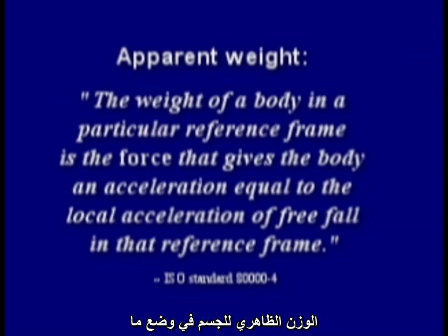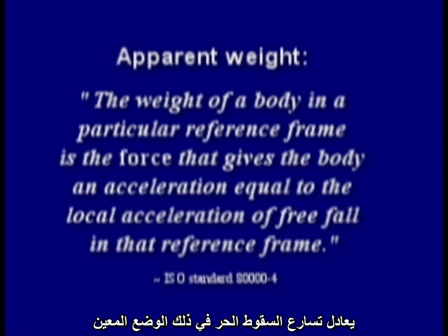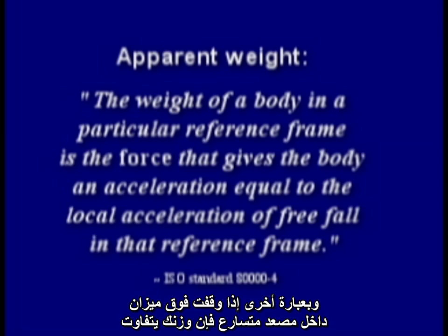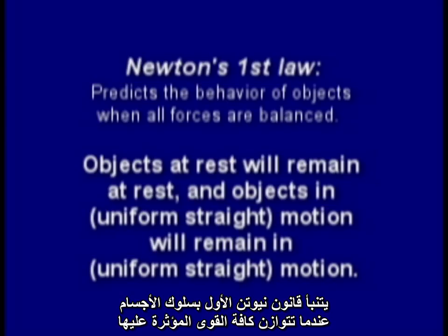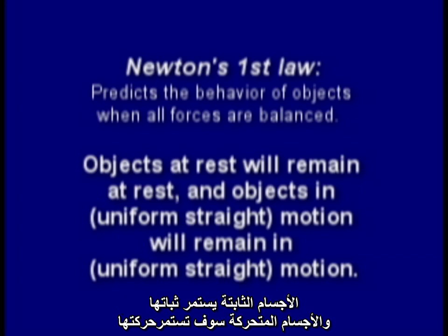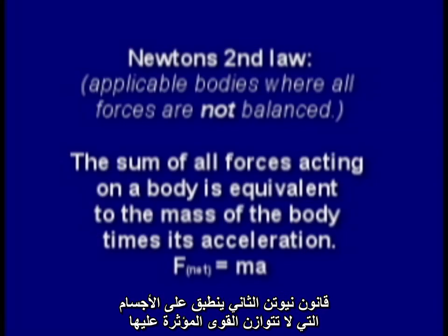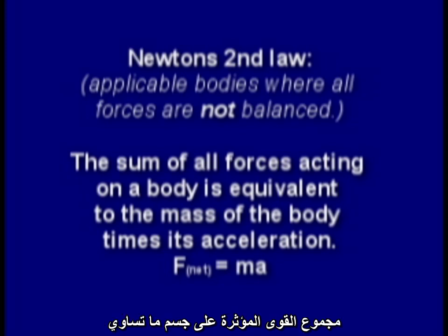The weight of a body is the product of its mass and the acceleration due to gravity: W equals mg. The apparent weight of a body in a particular reference frame is the force that gives the body an acceleration equal to the local acceleration of freefall in that reference frame. In other words, if you stand on a scale in an accelerating elevator, your weight will vary. Newton's first law predicts the behavior of objects when all forces are balanced: objects at rest will remain at rest, and objects in motion will remain in motion. His second law is applicable to bodies where all forces are not balanced — the sum of all forces acting on a body is equivalent to the mass of the body times its acceleration: F equals ma.